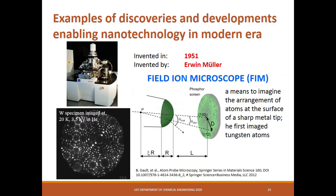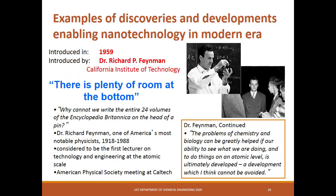In 1951, Muller invented the field ion microscope, or FIM, with higher resolution. This equipment can be used to image the arrangement of atoms at the surface of a sharp metal tip. Richard Feynman was an American theoretical physicist known for his work in path integral formulation of quantum mechanics, the theory of quantum electrodynamics, physics of superfluidity of supercooled liquid helium, and particle physics. Due to his contribution to quantum electrodynamics, Feynman received the Nobel Prize in Physics in 1965. He was a keen popularizer of physics, including a 1959 talk on top-down nanotechnology called 'There's Plenty of Room at the Bottom' at an American Physical Society meeting at the California Institute of Technology.